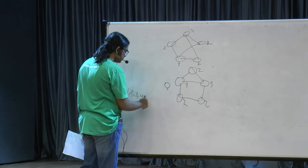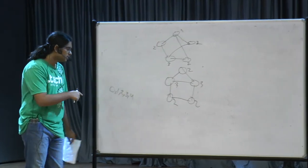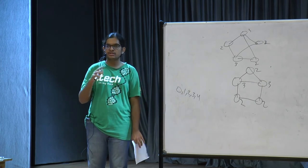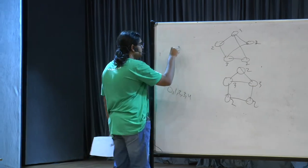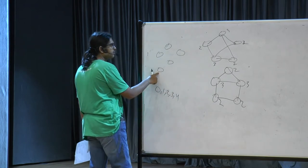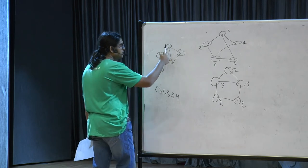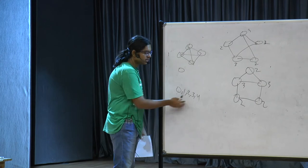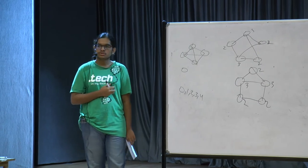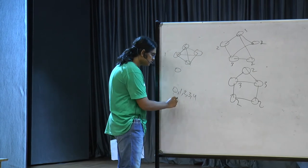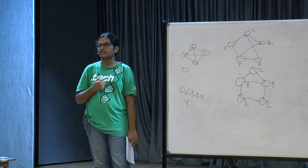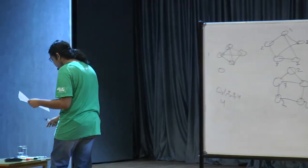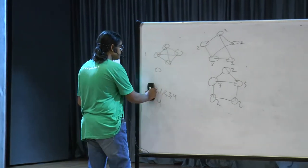We can't apply pigeonhole directly to the friends problem because there are five people and the number of friends they can have ranges from 0 to 4 — also five values. However, if there is a person with zero friends, there cannot be a person with four friends, since the person with no friends means even if everyone else knows each other, no one can know all four. So zero and four cannot both occur — the number of distinct possible friend-counts is at most four. By Pigeonhole, since there are five people, two must have the same number of friends.